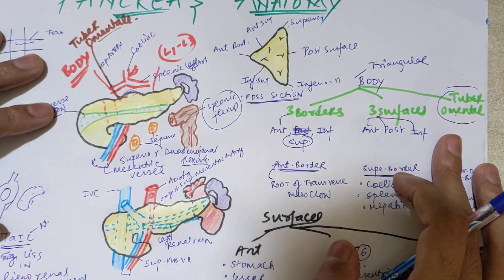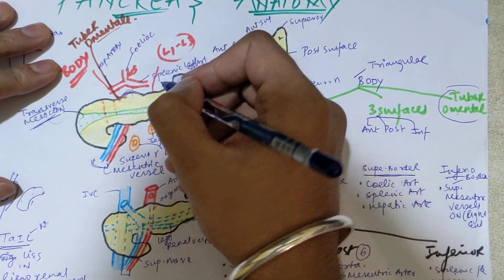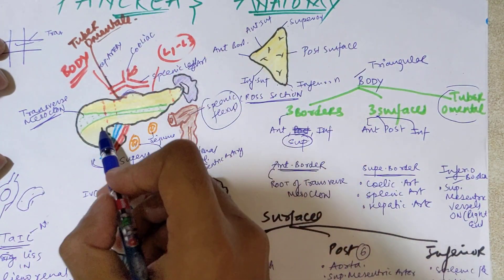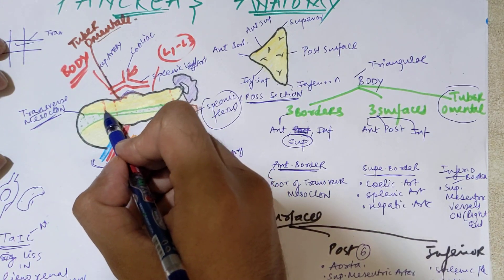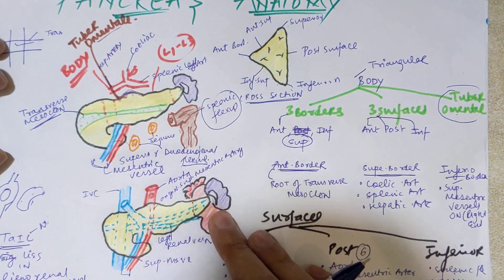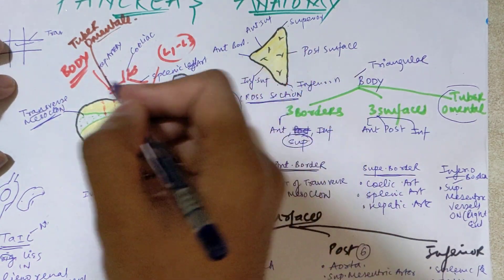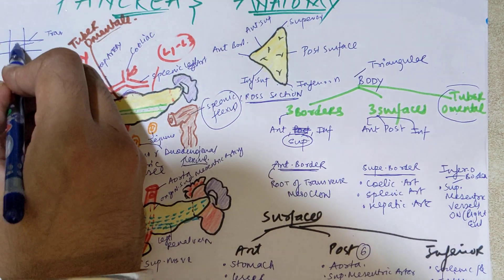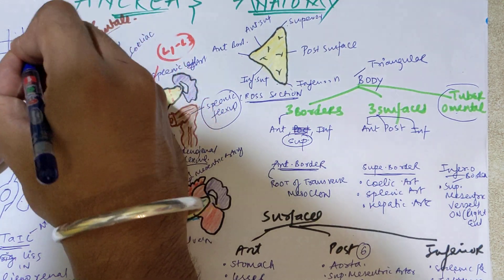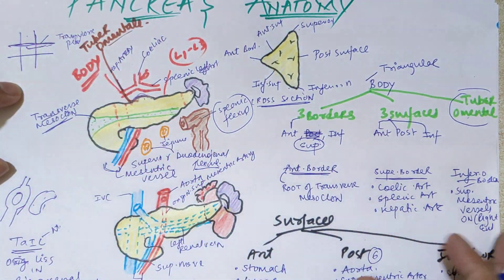I'll be explaining from the written notes, so just relate it to the diagrams. In the pancreas, the body originates at the level of vertebra L1 till L3, as discussed in the basics in the first video. In this diagram, the head is followed by the neck of 2.5 centimeters, and from the neck till the tail is the body. The body crosses the midline and is present just below the transpyloric plane.